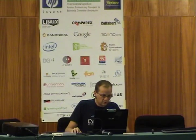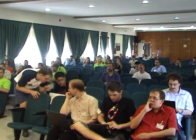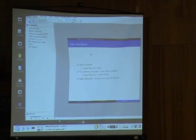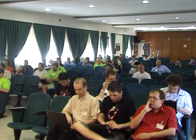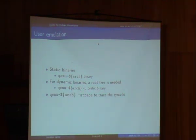Now, to get it working on your computer — the first thing to try is probably the very simple user emulation mode. You can run a binary compiled for another architecture on the same OS directly using QEMU, specifying the architecture and the binary name. However, this only works for static binaries. For dynamic binaries that use libraries, you need a root filesystem tree for that architecture including all the libraries, and you have to start QEMU with the -L prefix option.